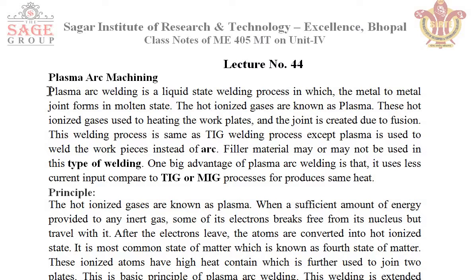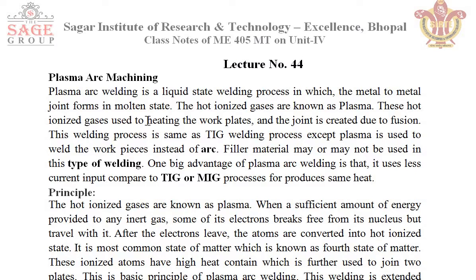Here the material is removed or machined with the help of a plasma arc. Plasma arc welding is a liquid state welding process in which the metal-to-metal joint forms in the molten state. The hot ionized gases are known as plasma, and these hot ionized gases are used to heat the work plates. The joint is created due to fusion.